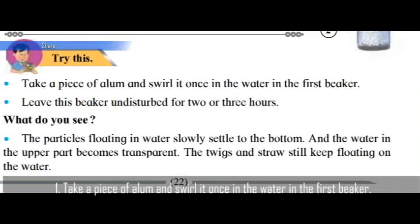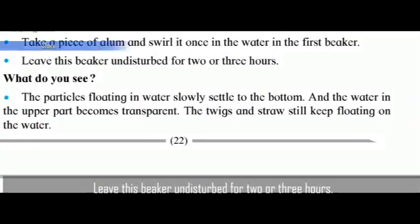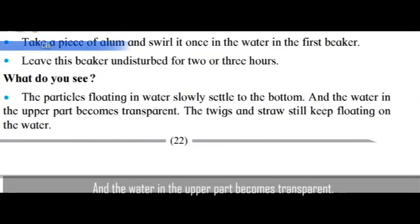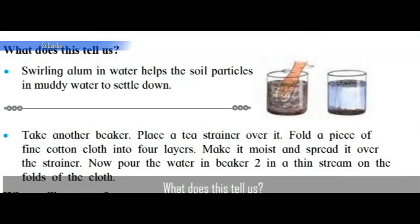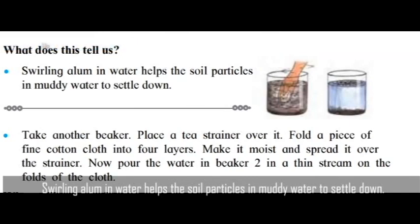Try this: take a piece of alum and swirl it once in the water in the first beaker. Leave this beaker undisturbed for two or three hours. What do you see? The particles floating in water slowly settle to the bottom, and the water in the upper part becomes transparent. The twigs and straw still keep floating on the water. This tells us that swirling alum in water helps the soil particles in muddy water to settle down.